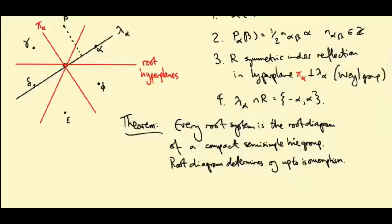And moreover, the root diagram or the root system determines the algebra of that group up to isomorphism. It doesn't determine the group up to isomorphism. It determines the algebra up to isomorphism.